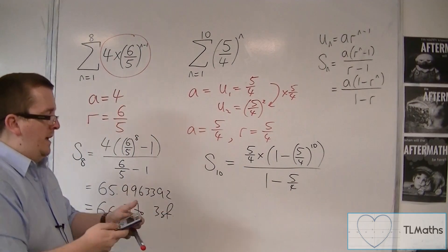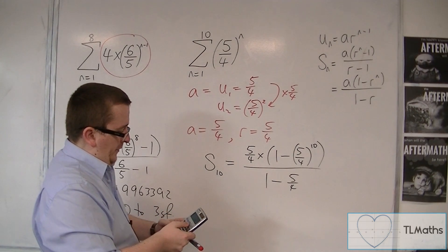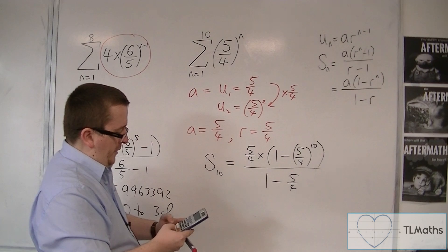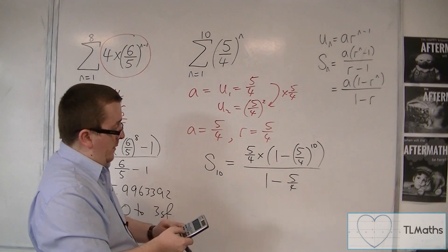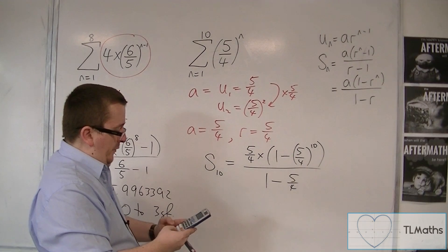Okay, so it's going to be a good practice of your fraction button here. So 5 quarters times by 1 minus 5 quarters to the power of 10, divided by 1 minus 5 quarters.